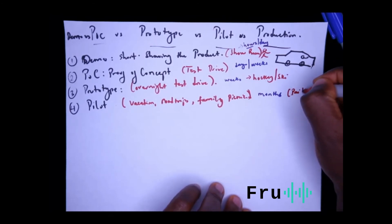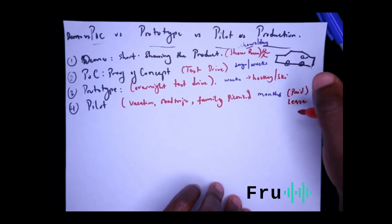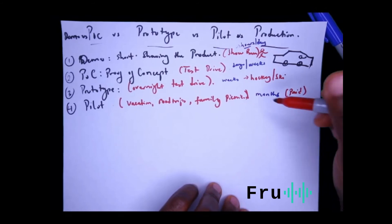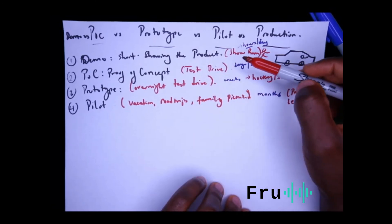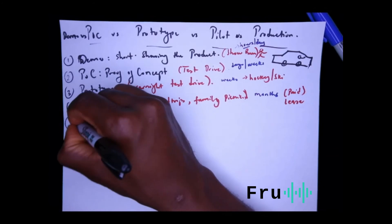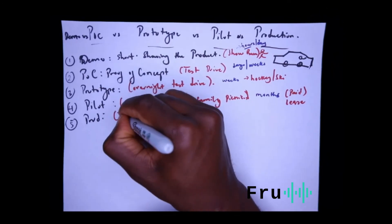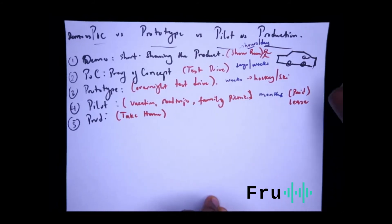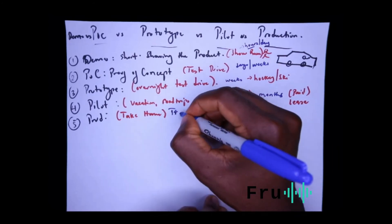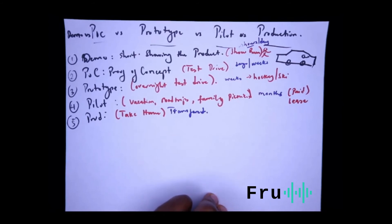Of course, any reasonable car dealership is not going to give you a car to keep for months and months for free — how are they going to make money with you putting mileage on it? So this is usually a paid pilot. You might want to pay some money for your time using the car, or maybe lease it for that period. If you come back after three or five months and say, 'This isn't going to work for me,' you can stop it — but you've paid, so the dealership isn't at too much of a loss. Then after all of this, if it's all good, you take it to production — you write that check, sign that contract, take the car home, and ownership is transferred. In the software world, that car is now in production.